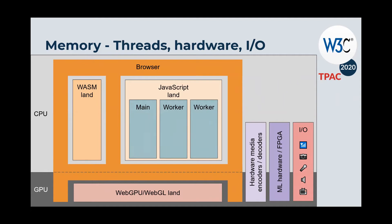Going further, JavaScript land is divided into additional regions thanks to workers. Browsers also leverage available hardware to provide inputs, outputs, and run specific processing algorithms — that appears on the right of this diagram. For I/O we're talking about network cards, microphones, cameras, speakers, and screens. For processing we're talking about media encoders and decoders, which are often hardware-based. These hardware boxes could theoretically be tied to either CPU memory or GPU memory.